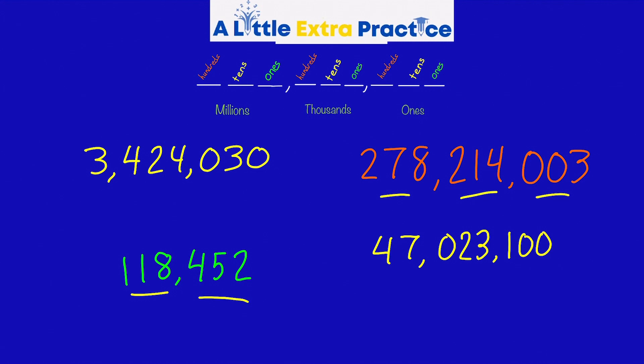This next one's a big one. So we have the ones period, thousands, millions: 278,214,003.